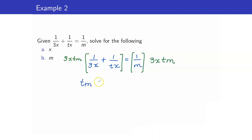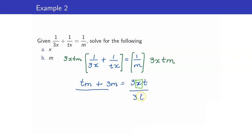We're left with Tm. Plus 3xTm times T over x — Tx gets cancelled, so we have 3m. On the other side, m gets cancelled and we're left with 3xT. Now our x is already isolated on one side, and it is multiplied to 3T. So we divide both sides by 3T, giving us x is equal to Tm plus 3m all over 3T.